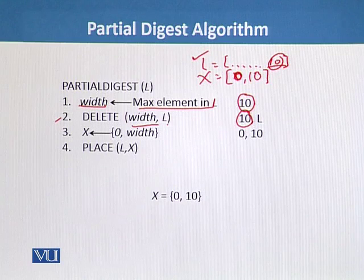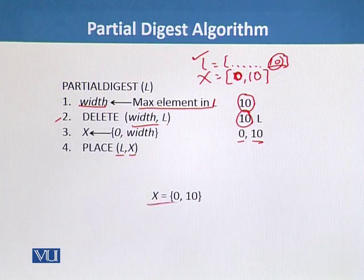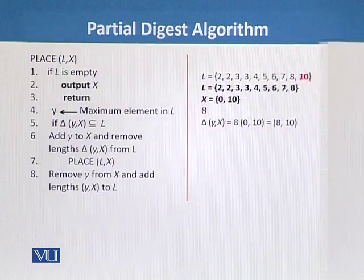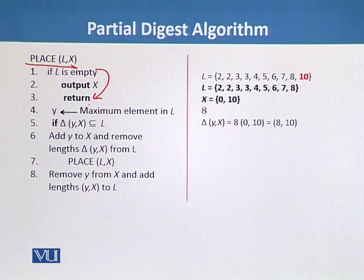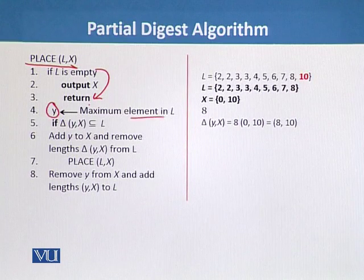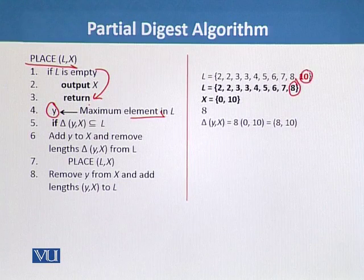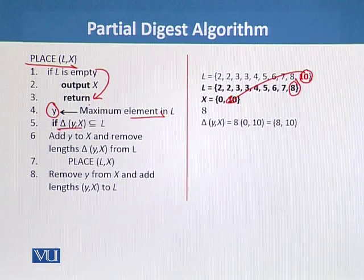Now we will place the values of L and X. L is the remaining multiset and X is {0, 10}. We have placed the values 0 and 10. Now, if L is empty then we get the answer and it will return. If L is not empty, we put the value of Y as the maximum element. The maximum element is now 8, because 10 has already been shifted to X. So we are left with 8 as the maximum element, and next is delta(Y, X).